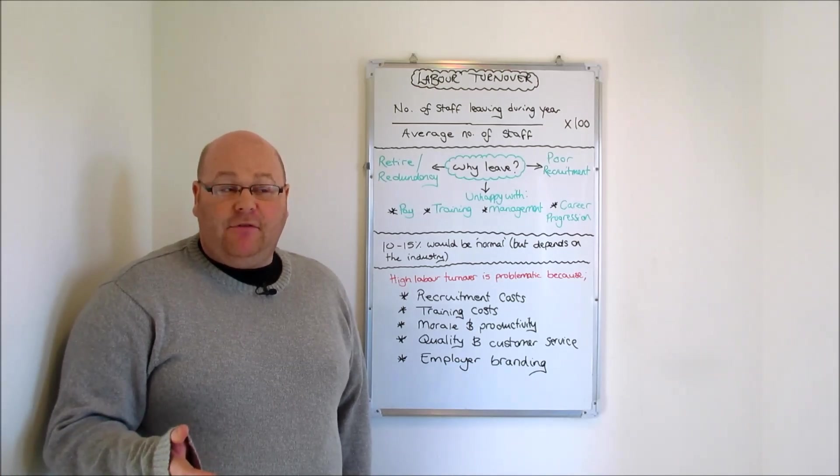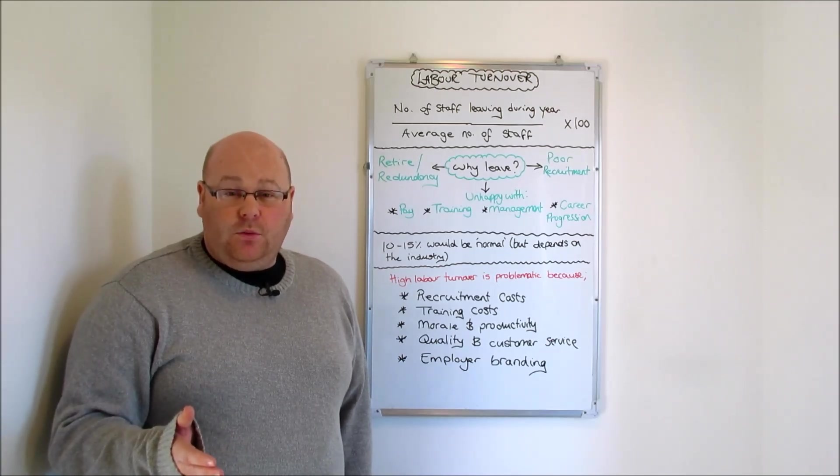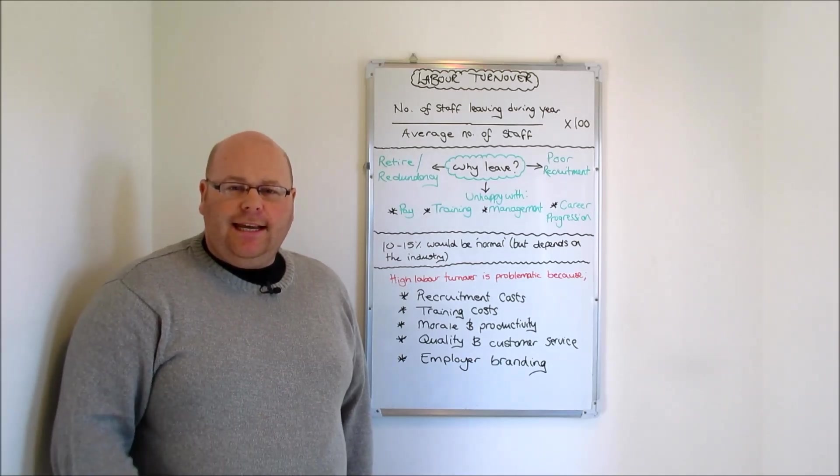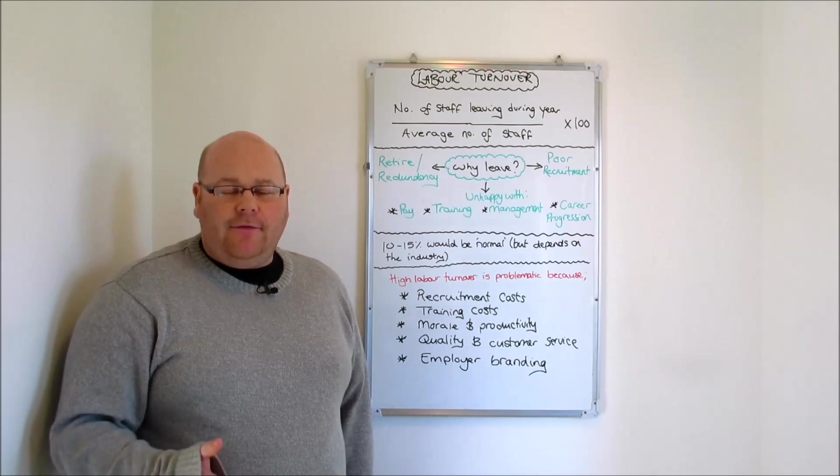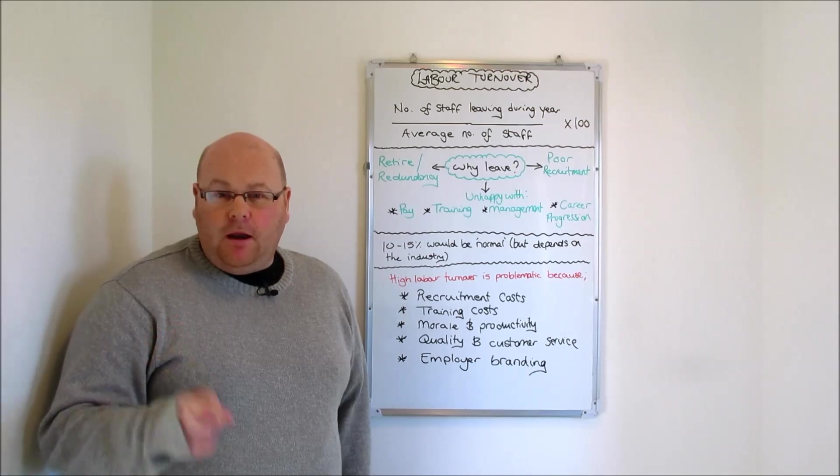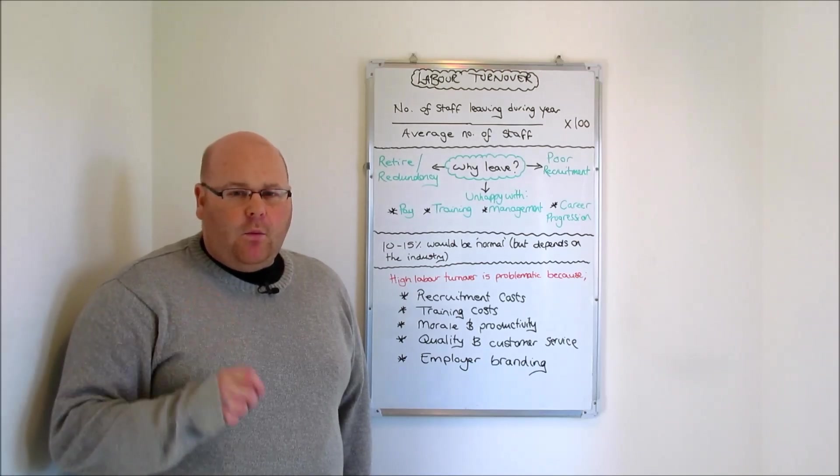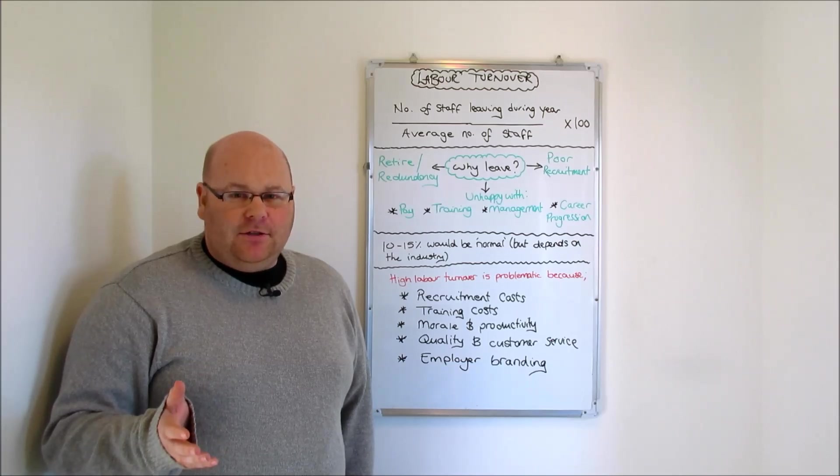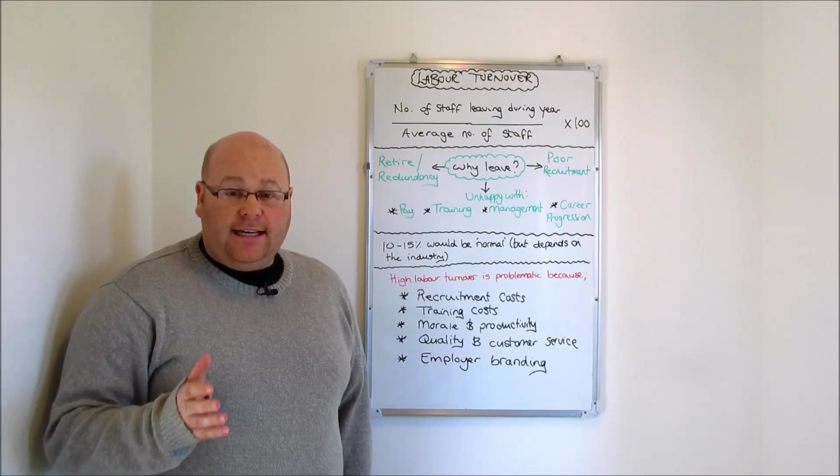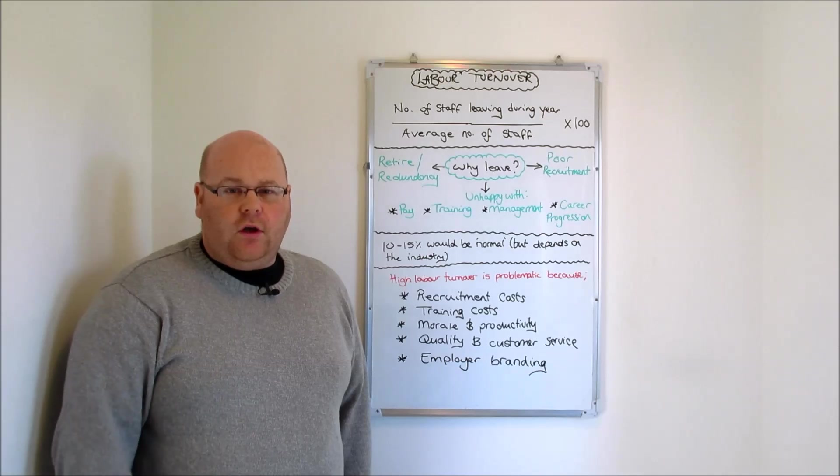The reason why we take an average is because some organisations don't necessarily have the same number of employees working during every month of the year, so we take an average of how many they've employed during the course of that year. When we've done that sum, we multiply it by 100 and that gives us a percentage. What that percentage tells the managers is what percentage of their workforce have decided to leave the organisation during the course of the year.